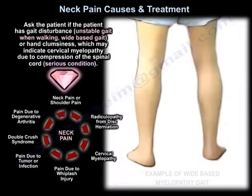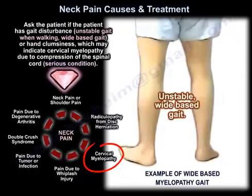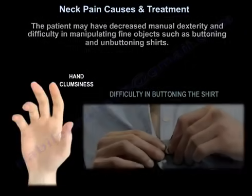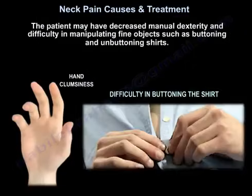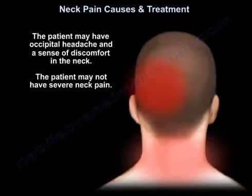Ask the patient if they have gait disturbance, unstable gait, wide-based gait, or hand clumsiness. These may indicate cervical myelopathy due to compression of the spinal cord, which is a serious condition. The patient may have decreased manual dexterity and difficulty manipulating fine objects such as buttoning and unbuttoning shirts. The patient may also have occipital headache and a sense of discomfort in the neck, and may not have severe neck pain.